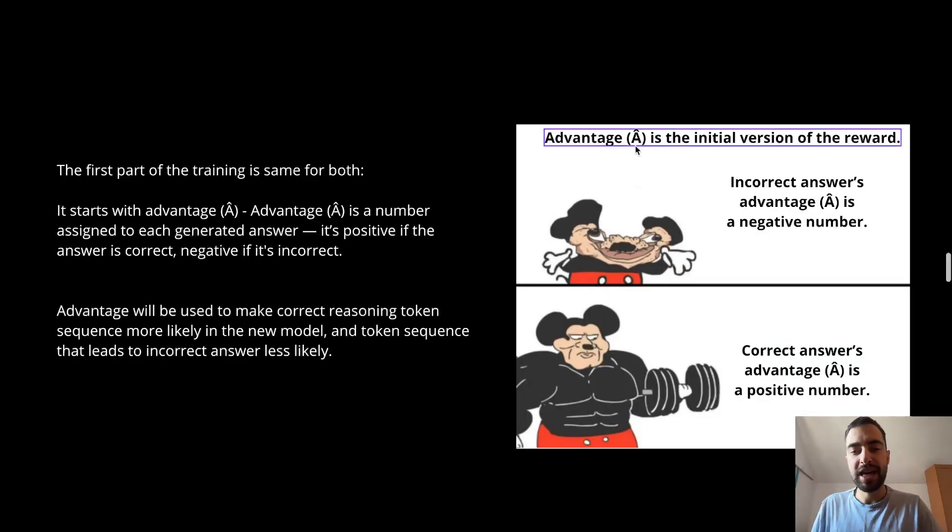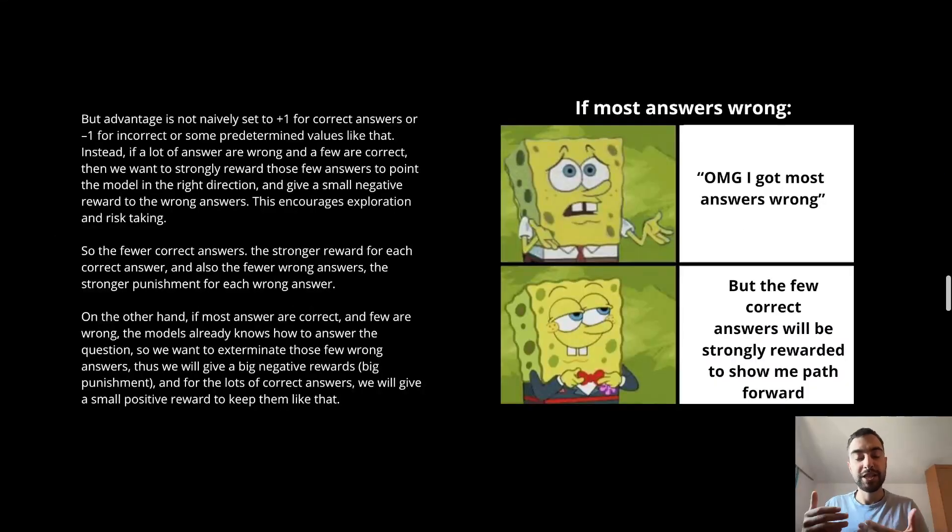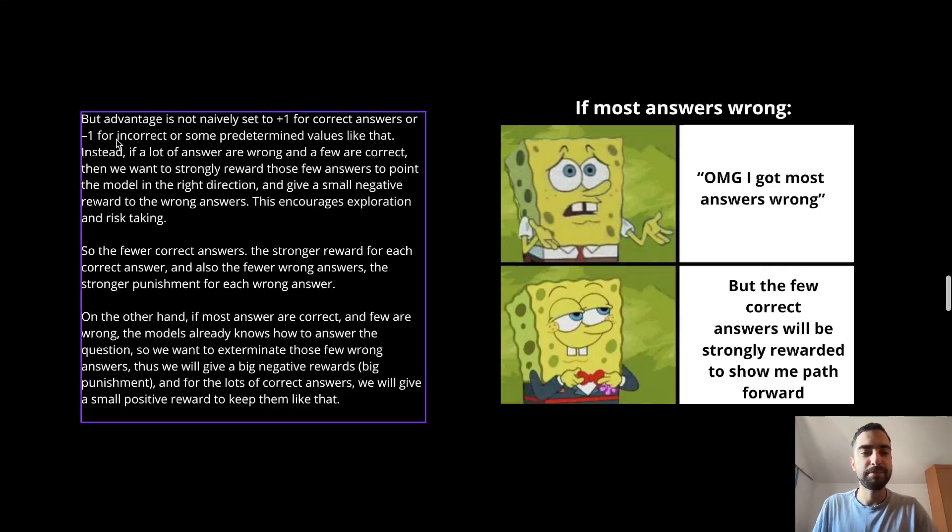We start with this number advantage. So for incorrect tokens, advantage will be negative number and for correct tokens, advantage will be a positive number. Later we will use this advantage to make correct answers and correct tokens more likely in the new model and incorrect tokens less likely. Advantage is not some predetermined number like plus one for correct and minus one for incorrect. Instead we want to assign advantage in a smarter way.